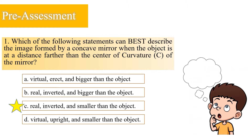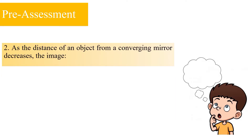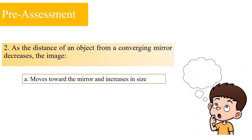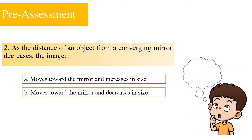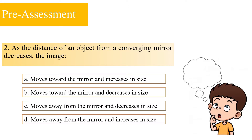Question number two: As the distance of an object from a converging mirror decreases, the image: A: moves towards the mirror and increases in size; B: moves towards the mirror and decreases in size; C: moves away from the mirror and decreases in size; or D: moves away from the mirror and increases in size. The correct answer is letter D — moves away from the mirror and increases in size.